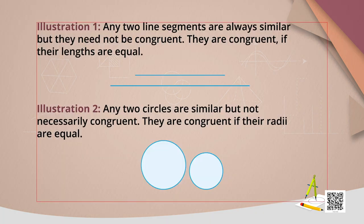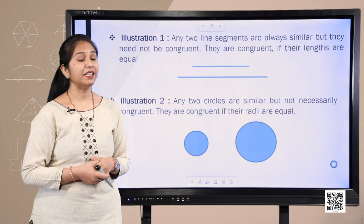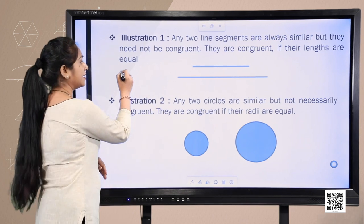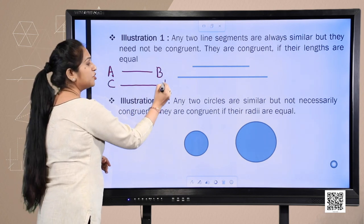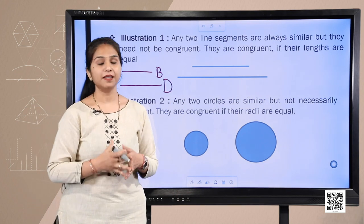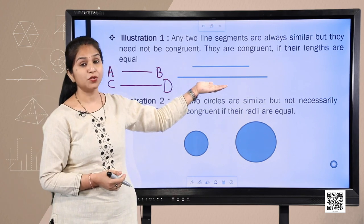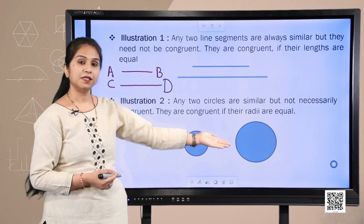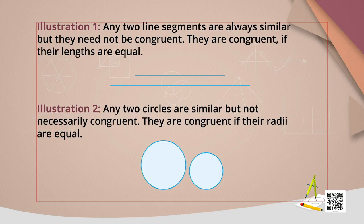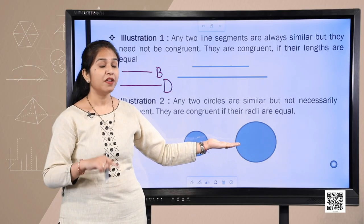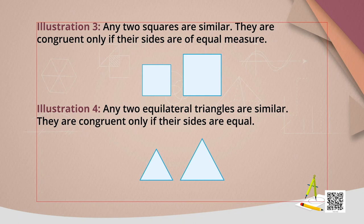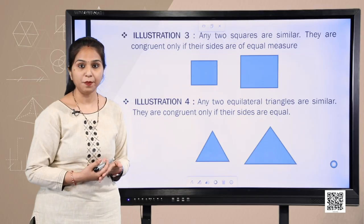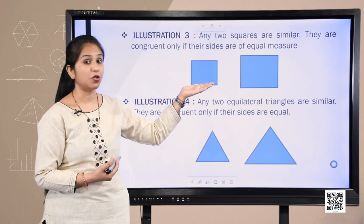Let's take a few more examples. Two line segments are similar figures and become congruent only if their measurements are the same — for example, if line AB = 5 cm and line CD = 5 cm, they are congruent. Two circles have the same shape but different radii, so they are similar but not congruent; they become congruent only when the radii are equal. Two squares of different sizes are similar but not congruent.